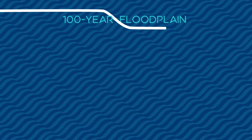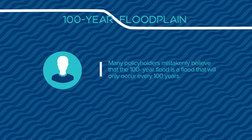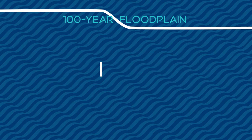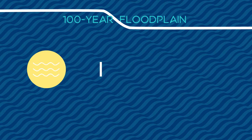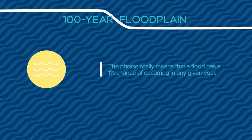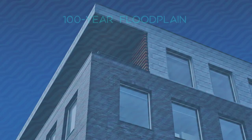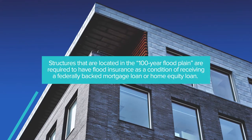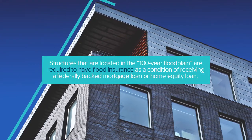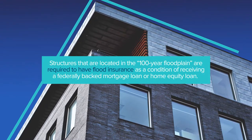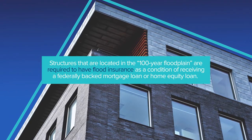The use of the phrase '100-year flood floodplain' has caused a great deal of confusion over the years. Many policyholders mistakenly believe that the 100-year flood is a flood that will only occur every 100 years. However, the phrase means something else entirely — it means that a flood has a 1% chance of occurring in any given year. Structures located in the 100-year floodplain are required to have flood insurance as a condition of receiving a federally backed mortgage loan or home equity loan.